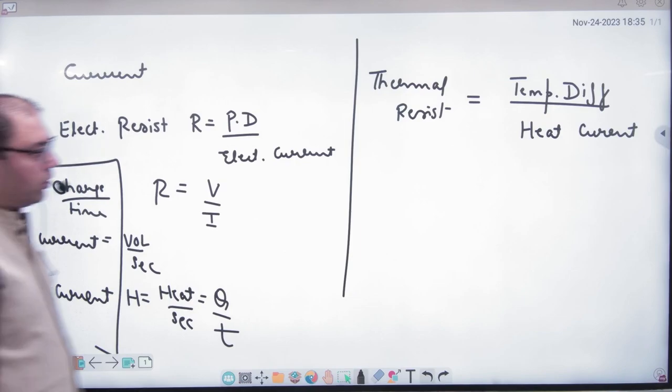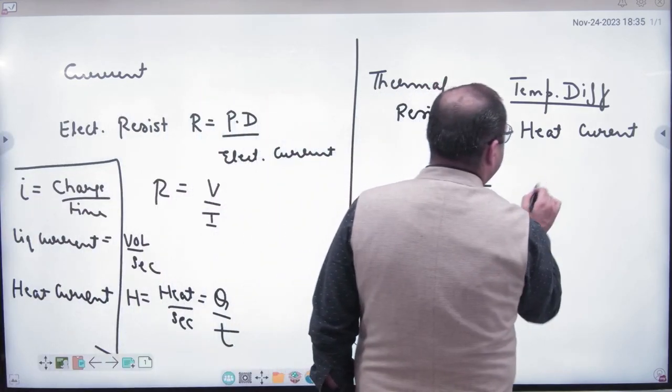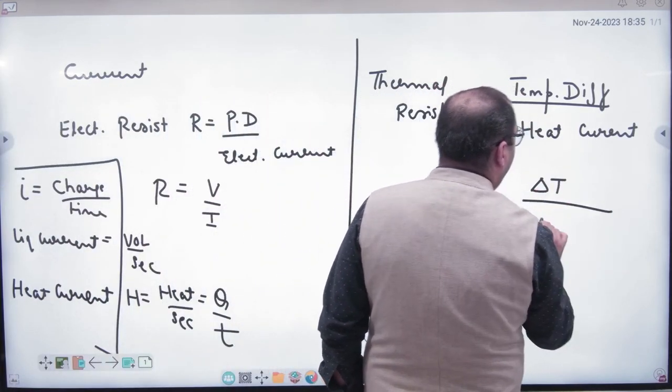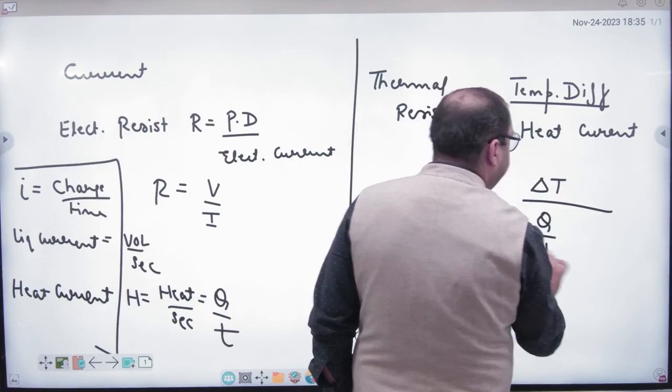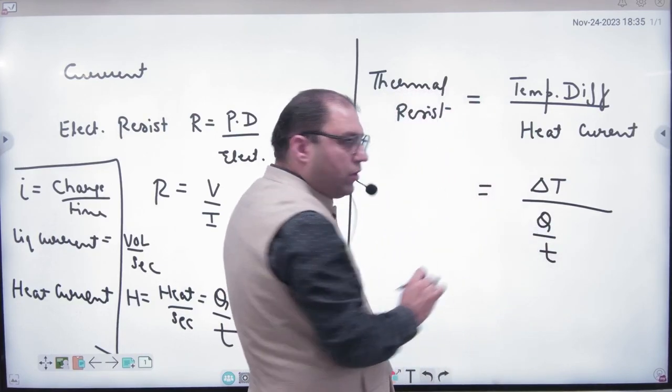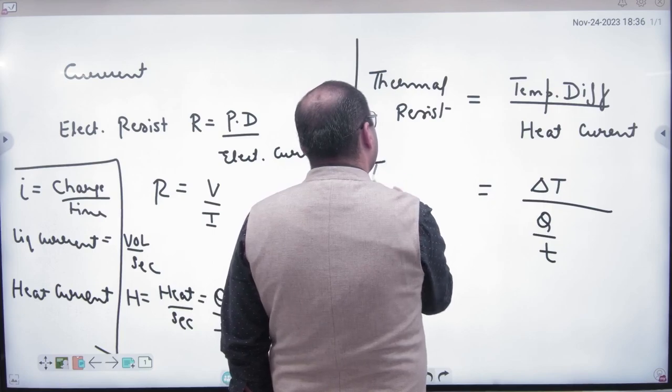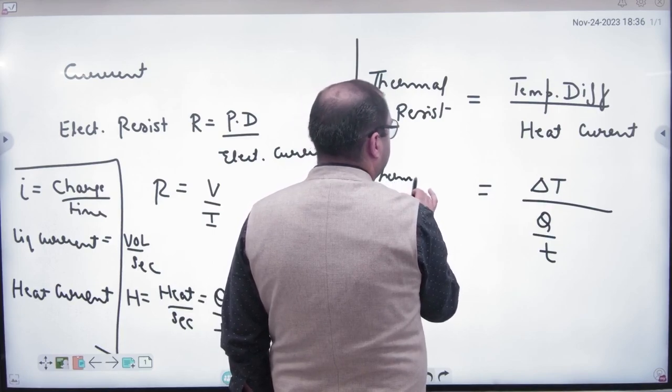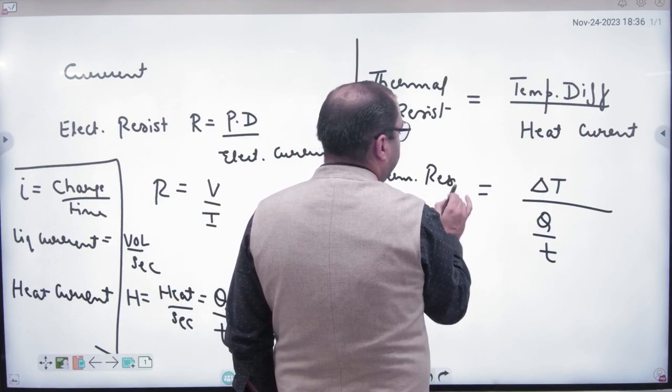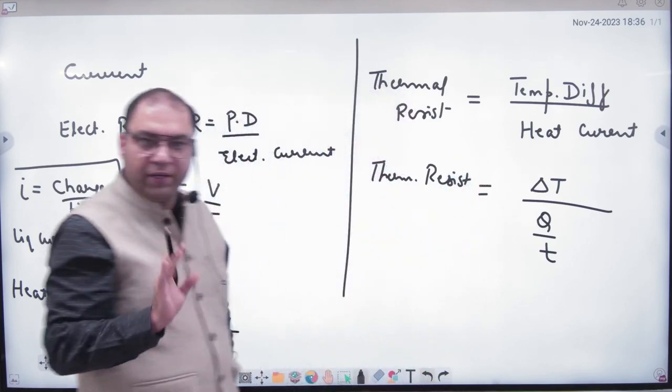So this means if I remove the temperature difference and divide it by heat by time, heat current, then what will I have? Thermal resistance. Thermal resistance will come here. What is the point, clear?